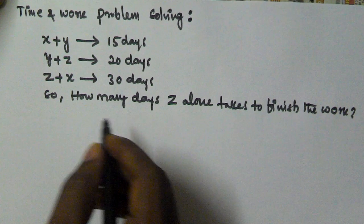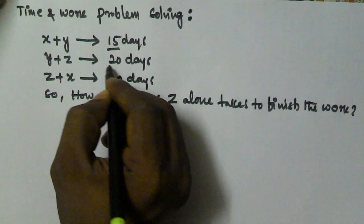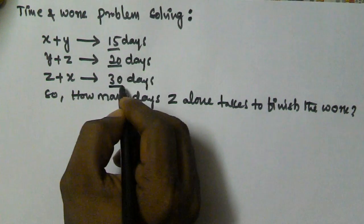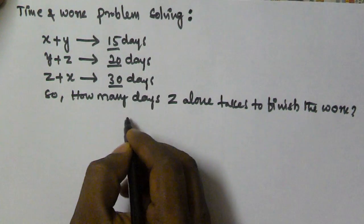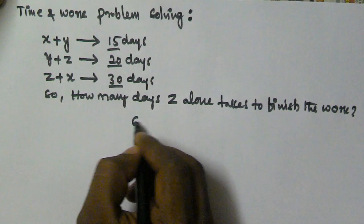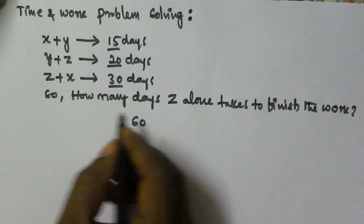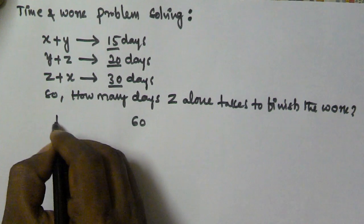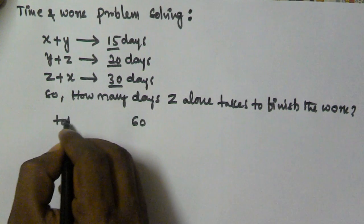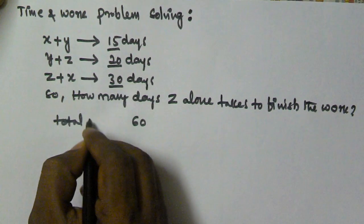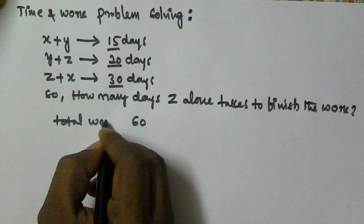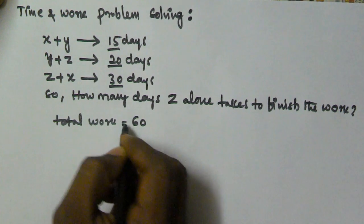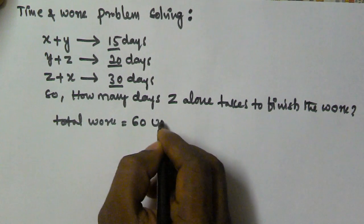Take the LCM of 15, 20, and 30. That is going to be 60. So let us assume the total work is equal to 60 units.